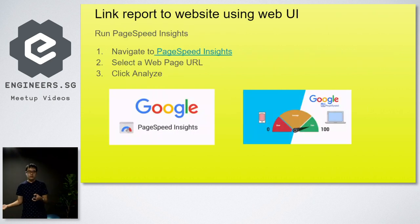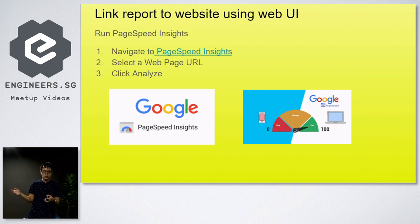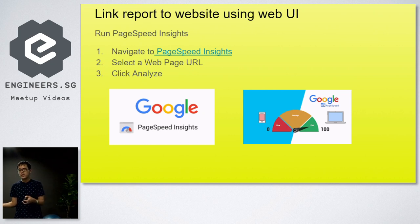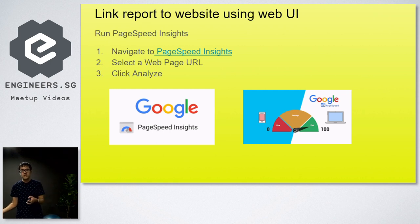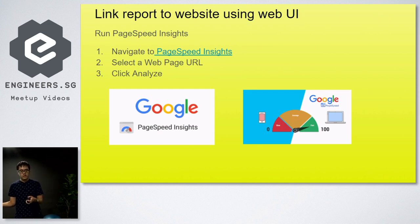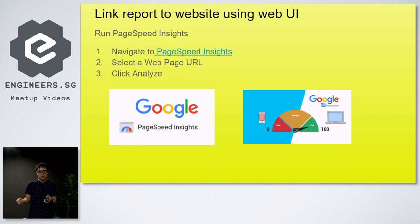Now I'll talk about how we link our report to a website using a web UI to monitor web performance. Google has PageSpeed Insights for this. We go to the PageSpeed Insights page on Google, select the web page URL we want to run Lighthouse on, and then click Analyze. We are then able to link the report back to the website, but first we need to run the audit to get the report.